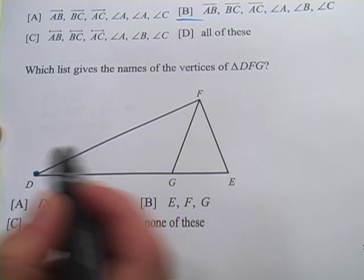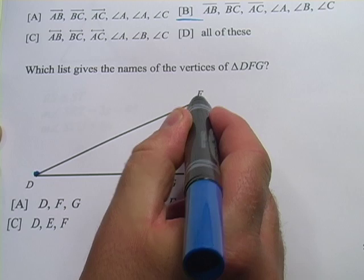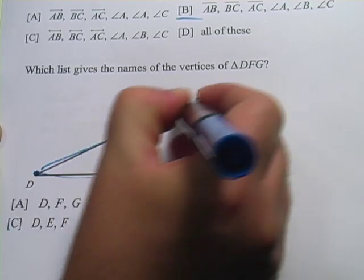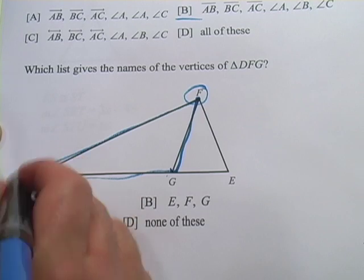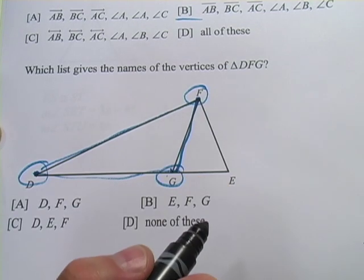DFG, so it would be this point, this point, and this point. So this is our triangle that we're looking at, and the vertices are really just going to be D, F, and G.